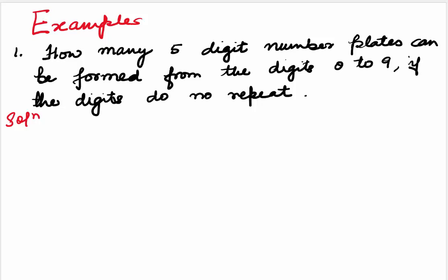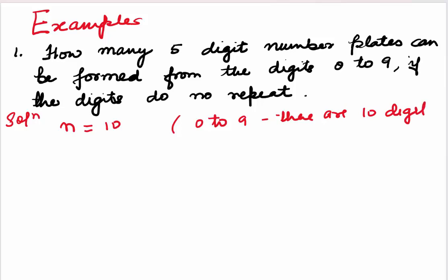Now let's practice some examples based on those three cases. Question 1: how many 5-digit number plates can be formed from the digits 0 to 9 if the digits do not repeat? Here n = 10 (digits 0–9) and r = 5. So we need to find 10P5.